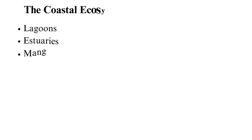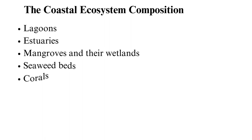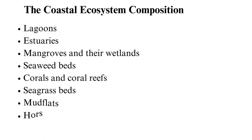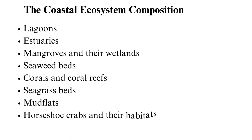The coastal ecosystem composition: ecosystems function through the dynamic interaction of biotic and abiotic components. The coastal ecosystem has high productivity and rich biodiversity that has survived high currents, tides, tsunami waves, and consistent human-caused pollution. Coastal ecosystems include lagoons, estuaries, mangroves and their wetlands, seaweed beds, corals and coral reefs, seagrass beds, mudflats, horseshoe crabs and their habitats, and sand beaches.